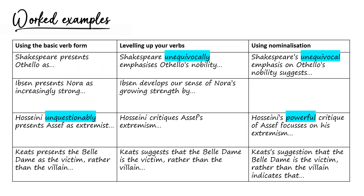Here are more examples of adding adverbs and adjectives. 'Shakespeare unequivocally emphasises Othello's nobility' — 'unequivocally' means absolutely 100%, it's very assertive, and it gives 'emphasises' a bit more strength. With nominalisation: 'Shakespeare's unequivocal emphasis on...' For the Kite Runner row: 'Hosseini unquestionably presents Assef as extremist' — 'unquestionably' makes the verb choice more punchy. Or in the nominalisation column: 'Hosseini's powerful critique.' Always think through your choice of verbs and adverbs to make sure they match.